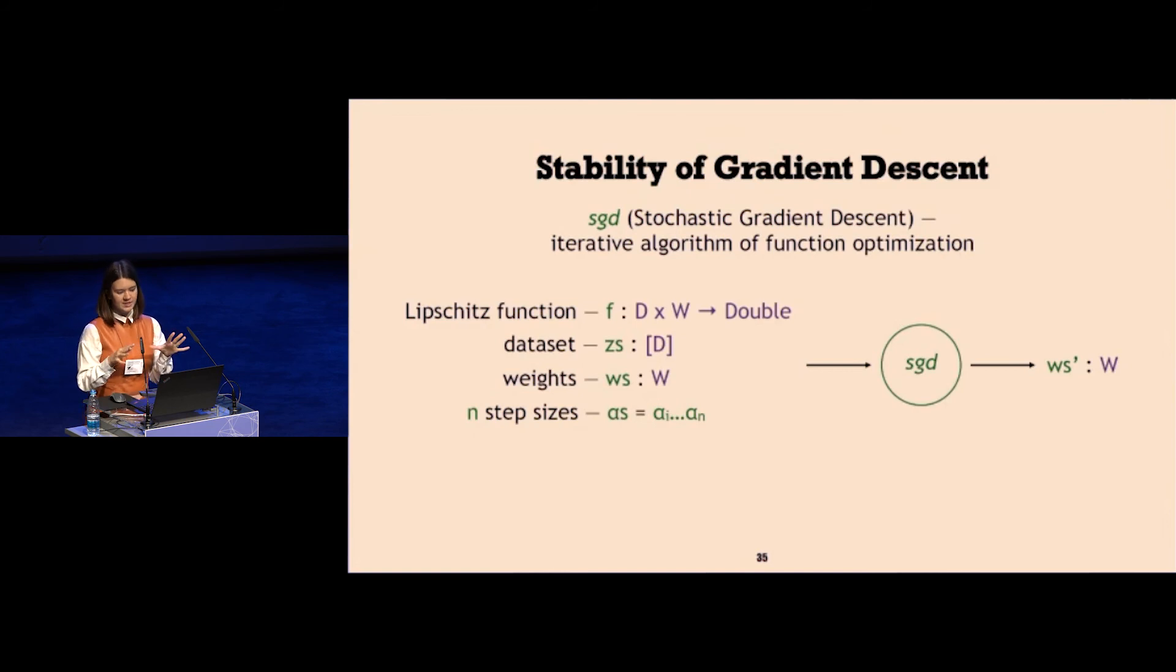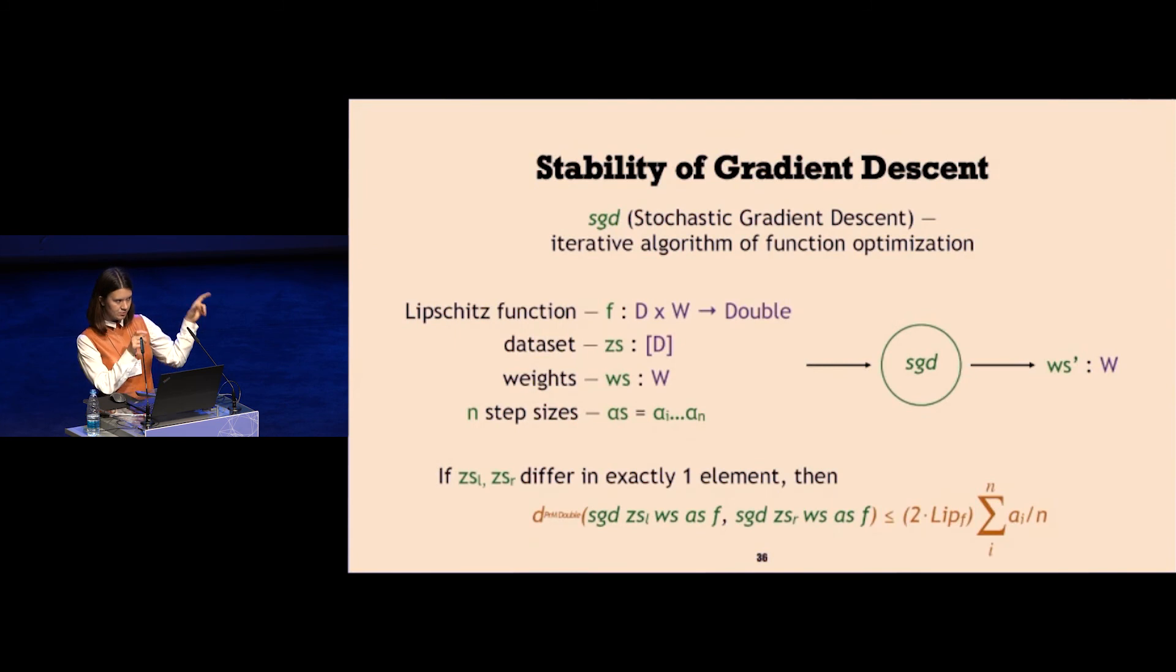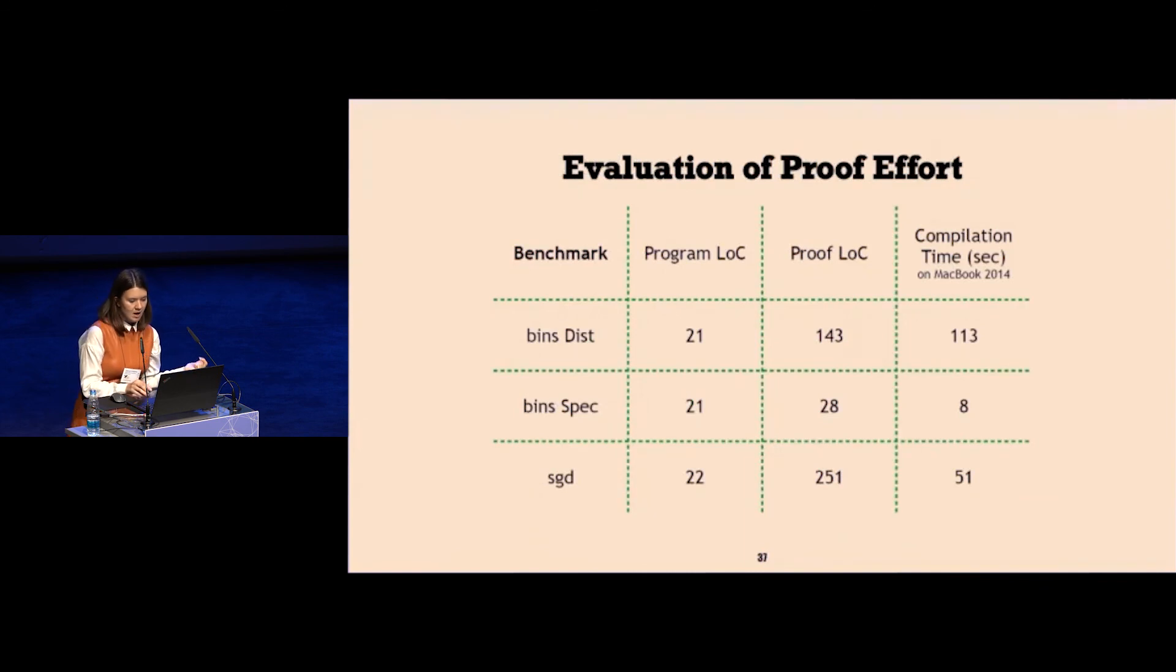Now what I would like to prove about that is that the function performs well on all data points, not just the data points from the data set. It would be good that for any other data set, the result would be roughly the same as with the certain data set that was supplied. What I say in the stability property is that if you have two different data sets which differ in exactly one element, then the distance between two calls of sgd which have other parameters same can be upper bounded by some constant non-dependent on the data set. In the right hand side we see the expression that depends on the Lipschitz function, on f obviously a constant, and a value that depends on number of iterations and step sizes, so does not depend on the data set.